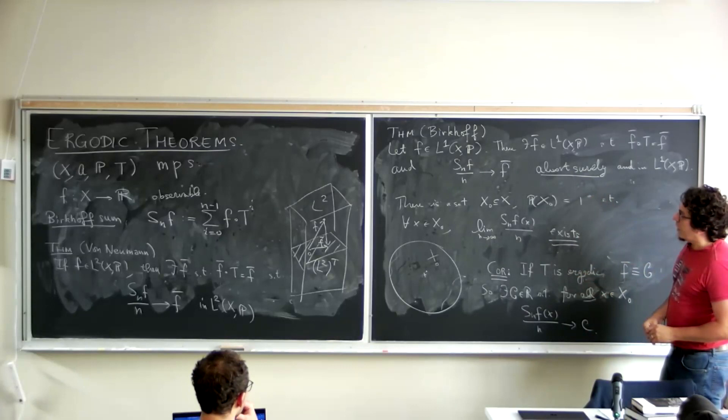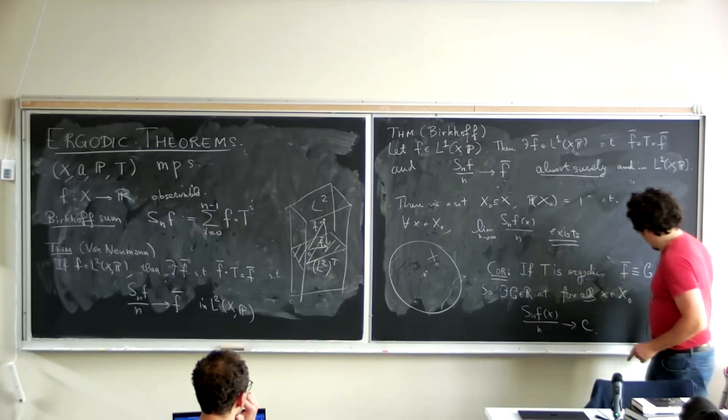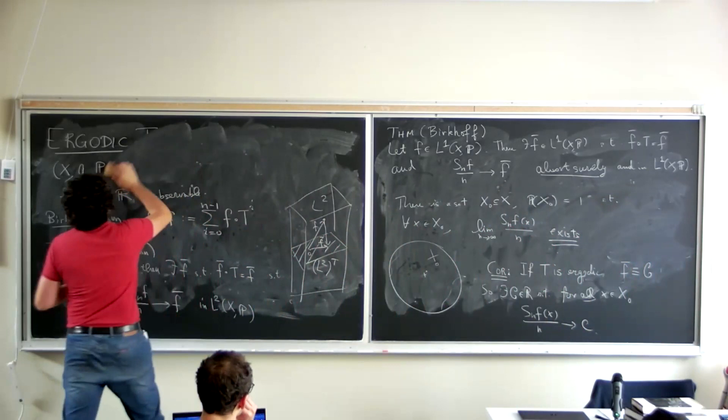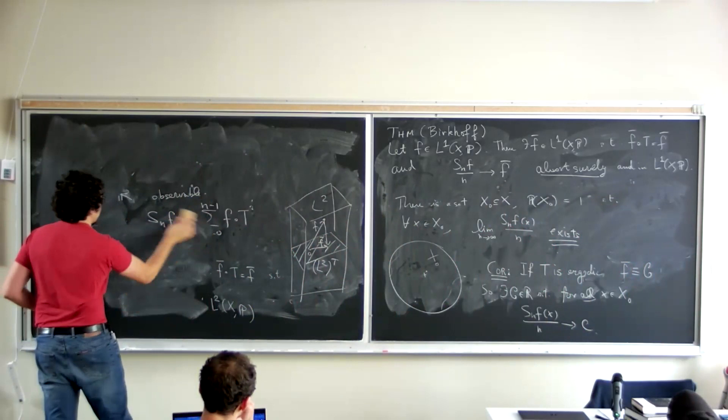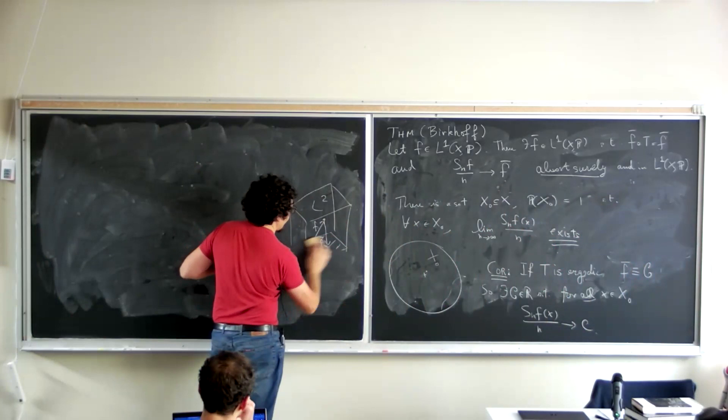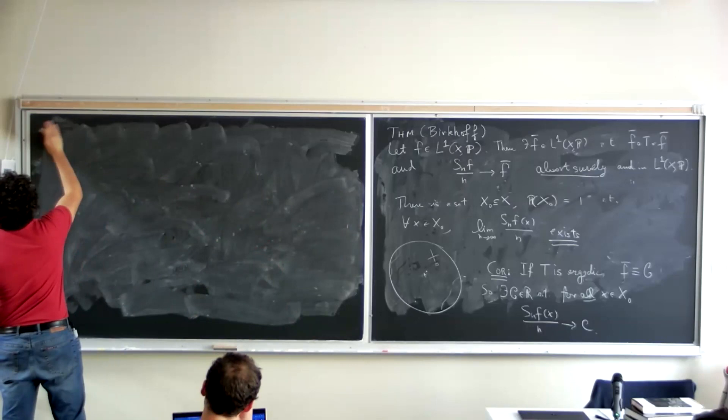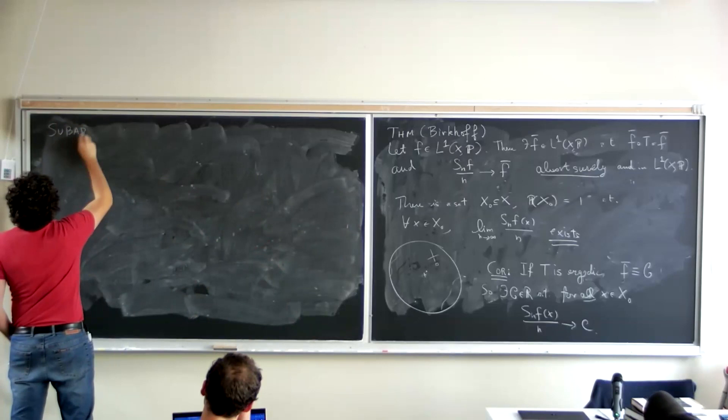What's next? This is by far the most famous version, but in our course we will often need an even stronger version, which is the subadditive ergodic theorem — Kingman's theorem, from the 1960s. To look at the subadditive ergodic theorem, we have to look at the notion of a subadditive cocycle.